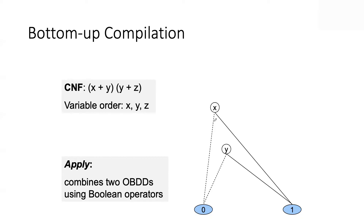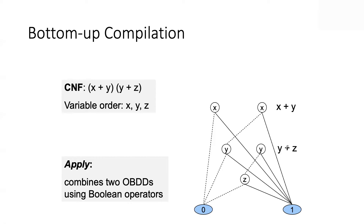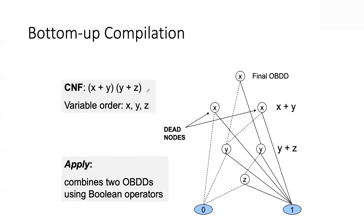After disjoining, we get the OBDD representing x or y. We do the same for the other clause, getting an OBDD for that clause, and then to finish the compilation we conjoin these two OBDDs using apply to get the final OBDD representing the CNF. By the time we're done, some nodes played an intermediate role but did not make it into the final answer — these are known as dead nodes.